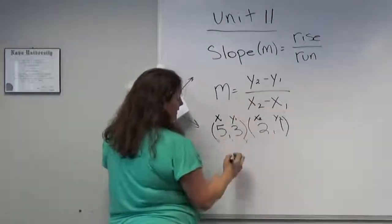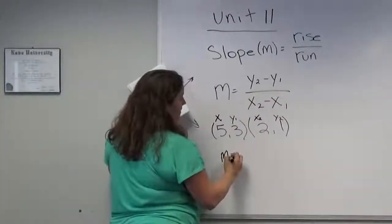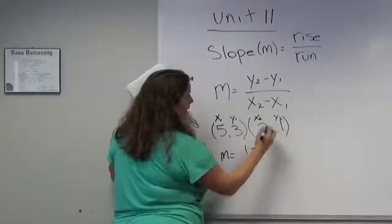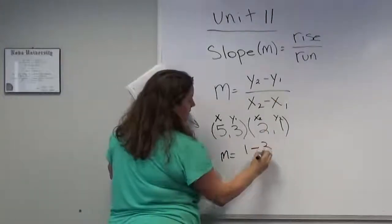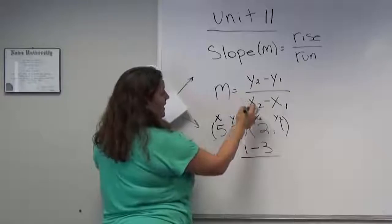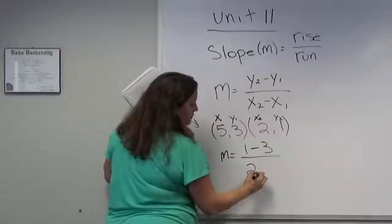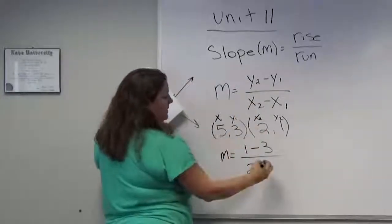So I'll use what I have here. So m equals y2, which is 1, minus y1, which is 3, divided by x2, which is 2, minus x1, which is 5.